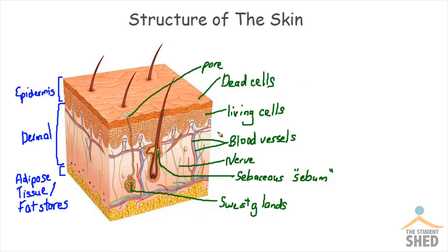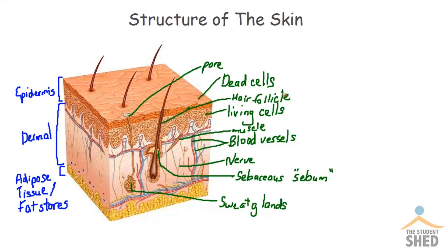Something interesting that you also find in the dermal layer is muscles. That muscle is attached to hair follicles — that's what we have right there: hair follicles. Sometimes when it's cold, you find that your hair just stands up on your skin.